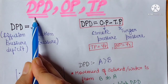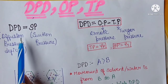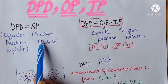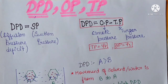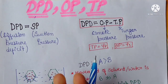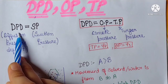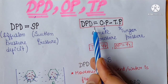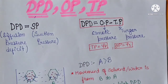First, you need to know what DPD is — it is the Diffusion Pressure Deficit. It is equal to SP, the suction pressure. In simple language, it is the ability of a cell to absorb water. If the capacity to absorb water increases, the DPD will be increased. The formula is: DPD = OP minus TP.